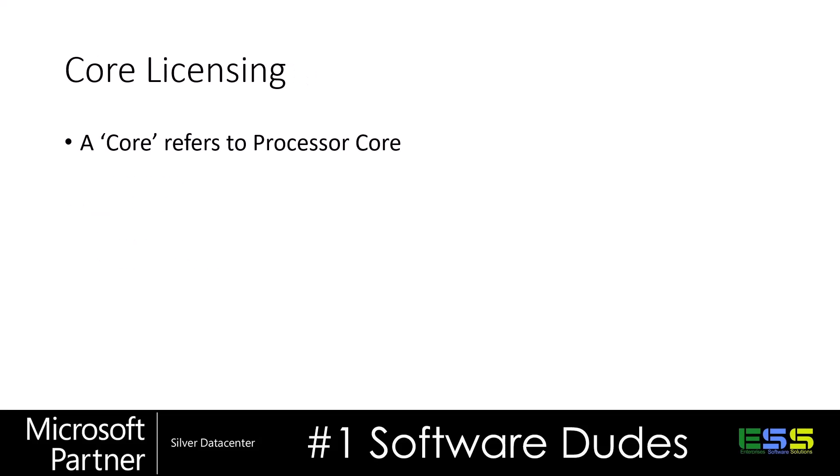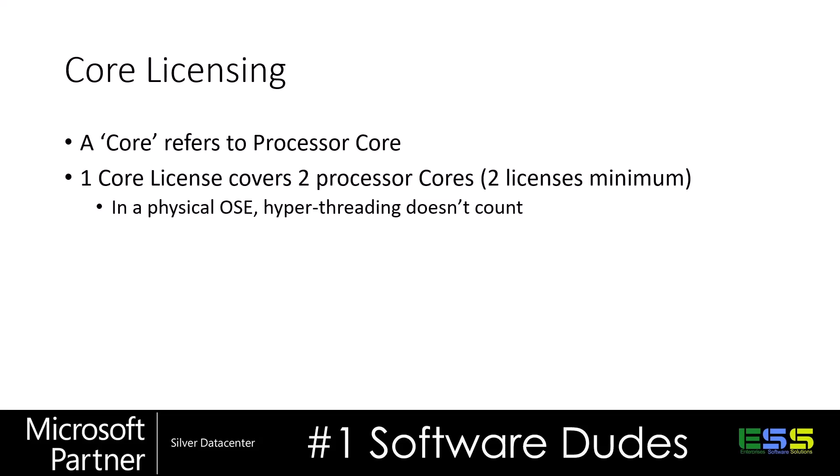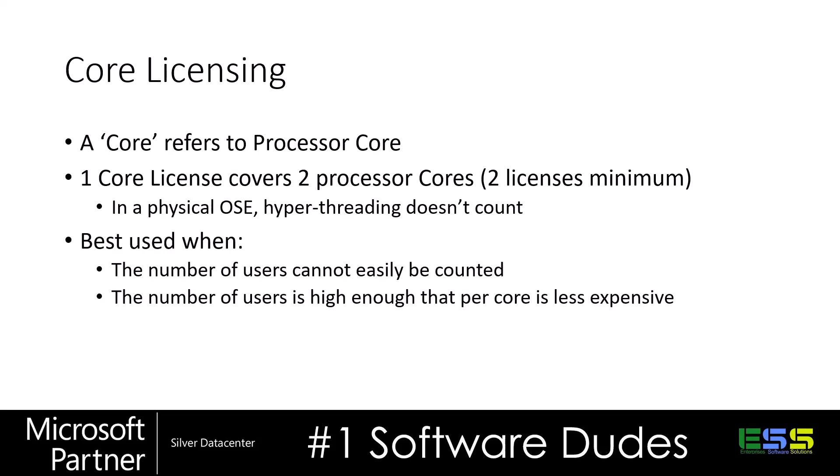Core licensing refers to processor cores — you're literally getting licenses for your cores. In SQL Server, one core license covers two processor cores, and you must have at least two licenses minimum, giving a minimum of four cores licensed in a physical operating system environment. Hyperthreading doesn't count — these are physical cores in a physical OS or virtual cores in a virtual OS. Core licensing is best when you cannot count the number of users on your platform, such as a web backend or SaaS software, or when the number of users is high enough that core licensing is actually cheaper.